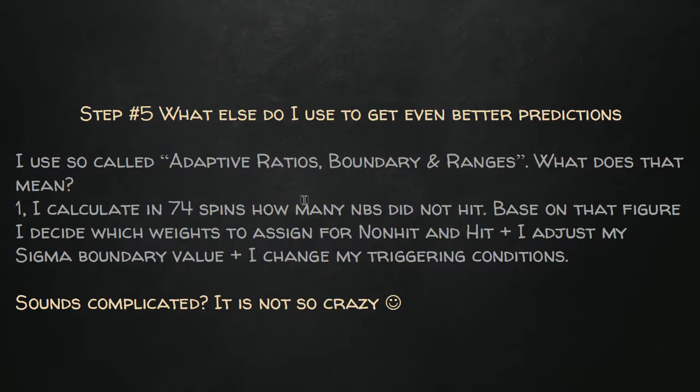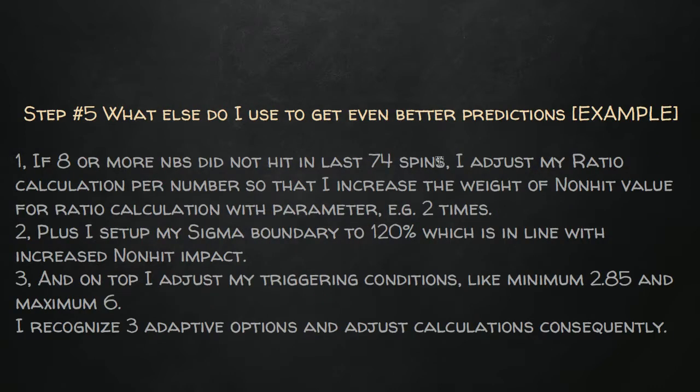On the other hand, if eight numbers didn't hit in 74 spins, non-hit is simply more important and you give it a certain weight — you increase the importance of the non-hit value for your ratio calculation. I do this including adjusting sigma boundaries and triggering conditions for play, all in an adaptive way, changing dynamically during play based on numbers which didn't hit in 74 spins. This comes from many years of experience with the random number generator.